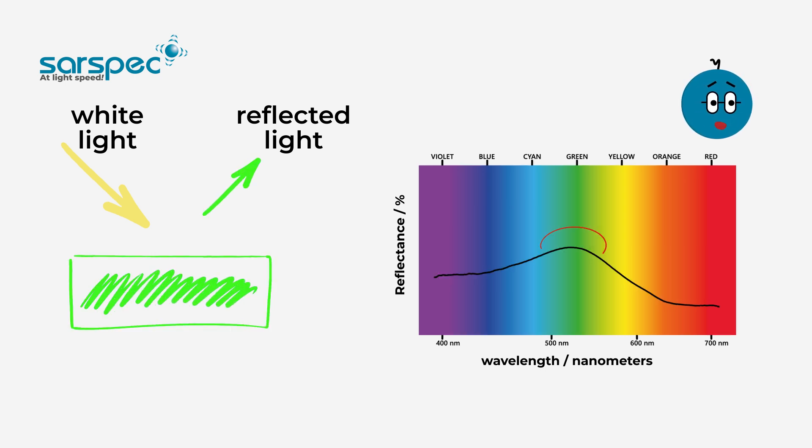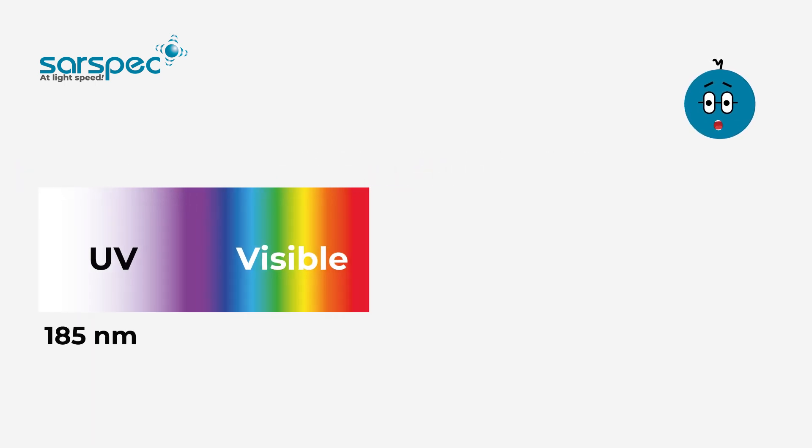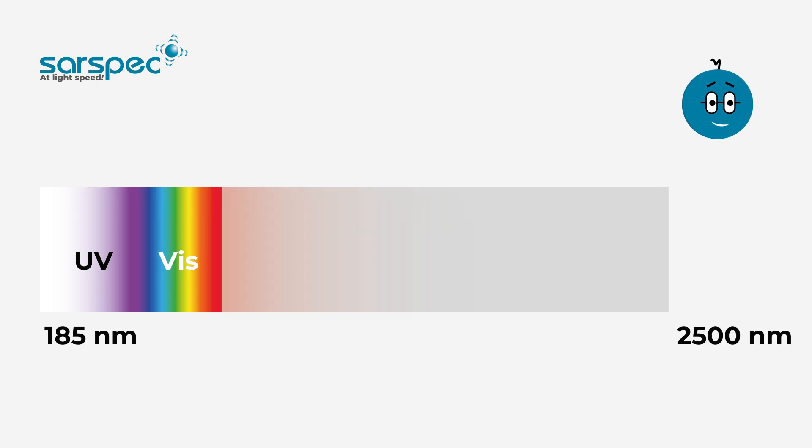If your sample is green, it will be between 500 and 550 nanometers. But if it's red, it will be in the region above 600 nanometers. We can do this over a wide range, from 185 to 2500 nanometers.